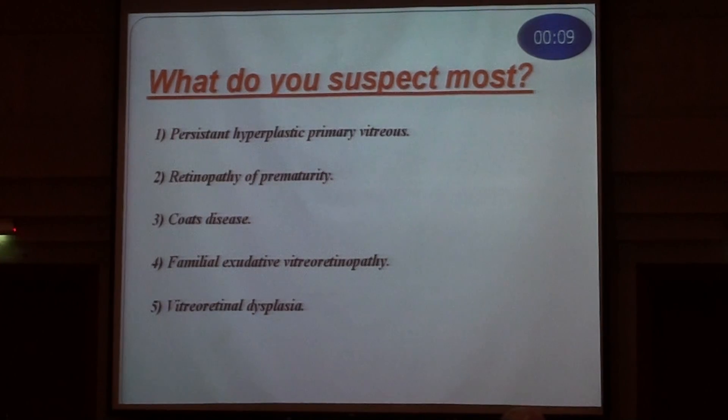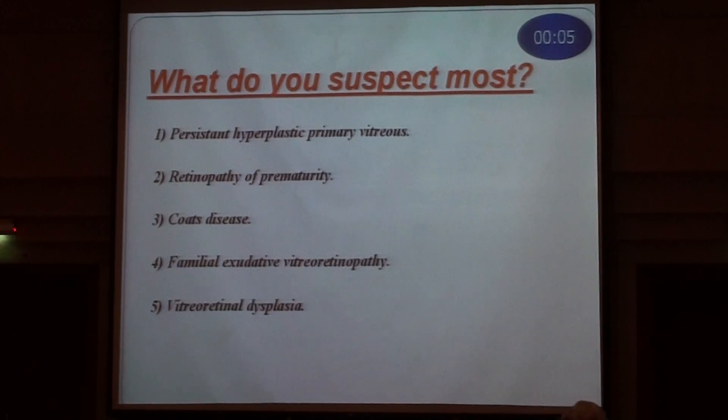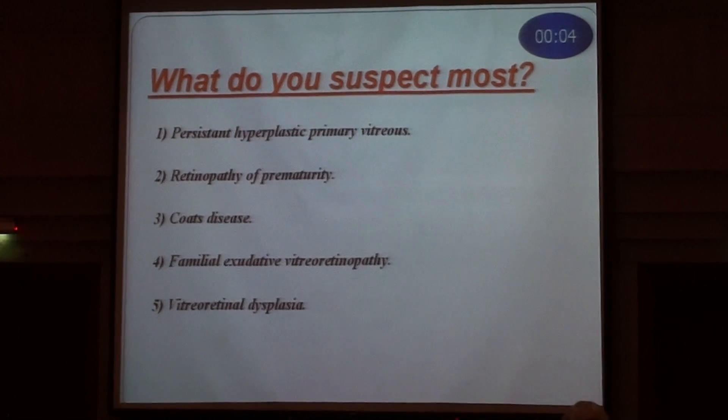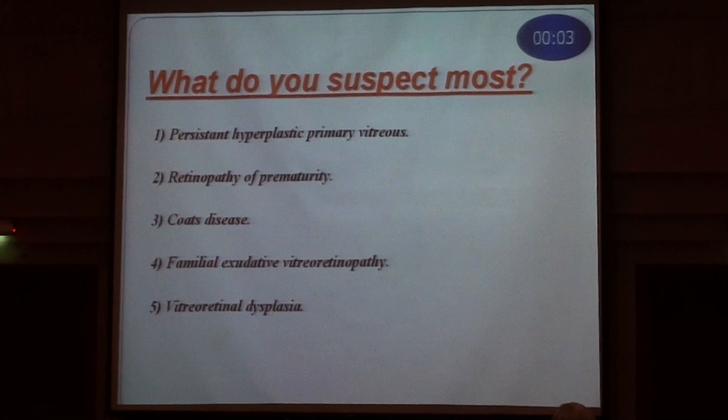The choices are: persistent fetal vasculature, retinopathy of prematurity, Coats disease, familial exudative vitreoretinopathy, or retinal dysplasia.